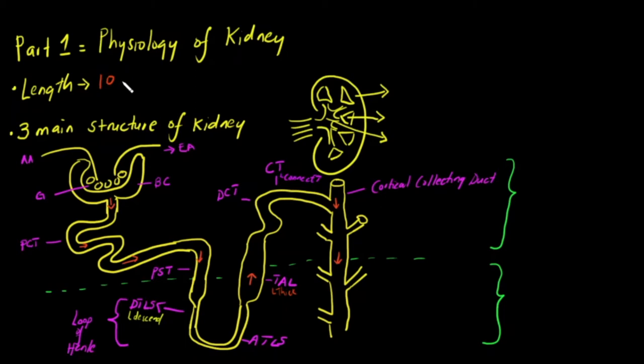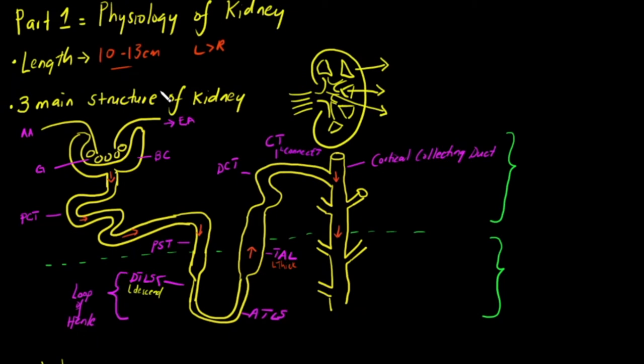What is the normal length of a kidney? A normal kidney length is anywhere between 10 to 13 centimeters. The left kidney is slightly longer than the right one. If you have a pathology, the kidney will be much smaller or much larger than that range.